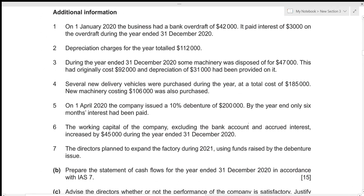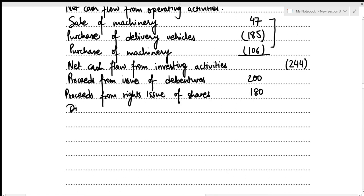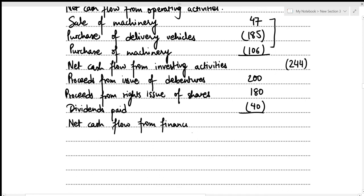From the statement of changes in equity, dividends paid include final dividend of 25,000 and interim dividend of 15,000, totalling 40,000. This is a cash outflow, so we record dividends paid as (40,000). Net cash flow from financing activities = 200 + 180 − 40 = 340,000.